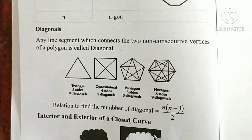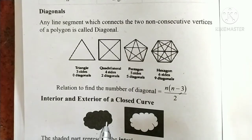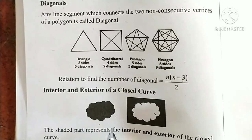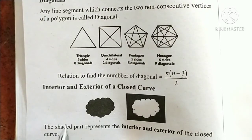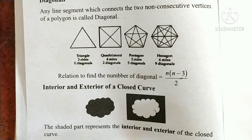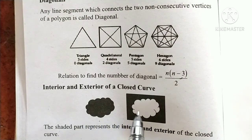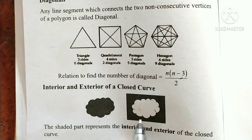Next, interior and exterior of a closed curve. The shaded part inside the closed curve represents the interior. The outer part represents the exterior of the closed curve.